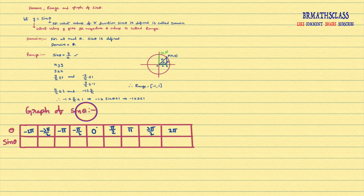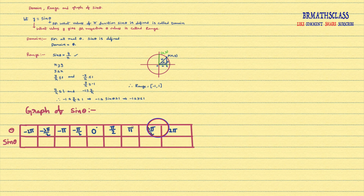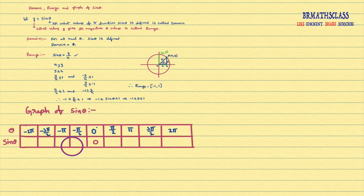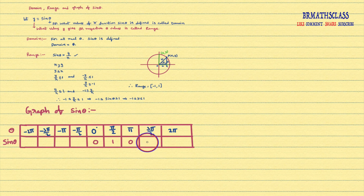You observe this graph of sine theta. I consider some theta values in between minus 2 pi to plus 2 pi. Since the domain is all real numbers, we cannot list all values. From the trigonometry table: sin 0 degrees is 0, sin pi by 2 is 1, sin pi is 0, sin 3 pi by 2 is minus 1, and sin 2 pi is 0.